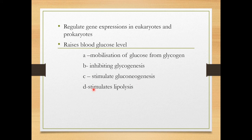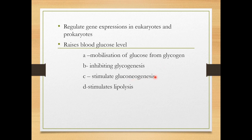The fourth method is stimulating lipolysis — the breaking down of lipids — which then converts into glucose. So these four methods increase the blood glucose level: first, mobilization of glucose from glycogen; second, inhibiting glycogenesis to prevent glycogen synthesis; third, stimulating gluconeogenesis to produce glucose from non-carbohydrates; and fourth, lipolysis — converting fats into glucose.